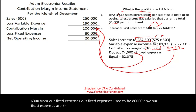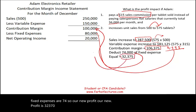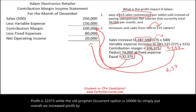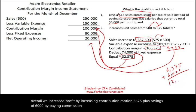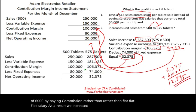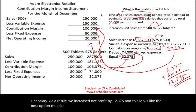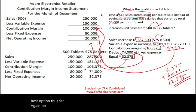The new profit is $32,375 compared to the current profit of $20,000. Overall, profit increased by $12,375: contribution margin up $6,375 plus savings of $6,000 from replacing the flat salary with commission. This looks like the best option so far. Motivating employees to sell more clearly benefits the company.